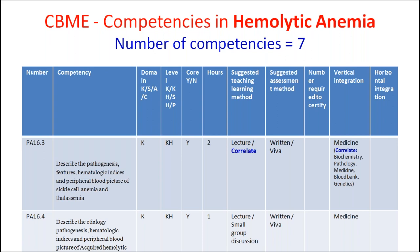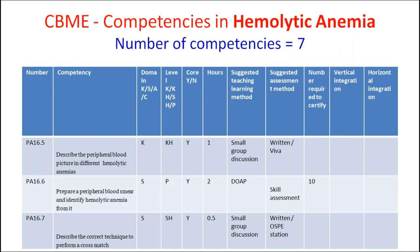The fourth competency is to describe the etiology, pathogenesis, hematological indices, and peripheral blood picture of acquired hemolytic anemias. This is probably a lecture and small group discussion. The suggested method of assessment is written and viva. Medicine can throw light on clinical features and when to suspect acquired hemolytic anemia in a clinical setting.